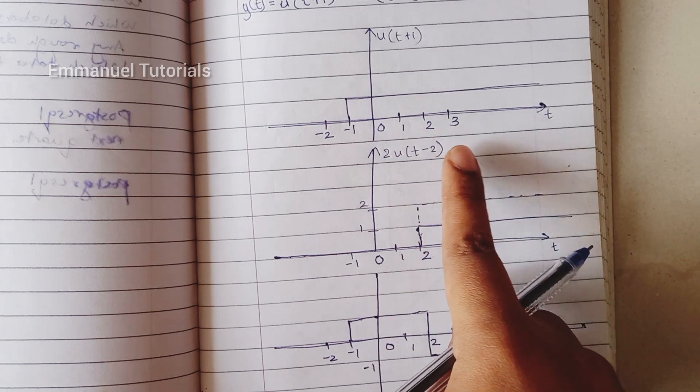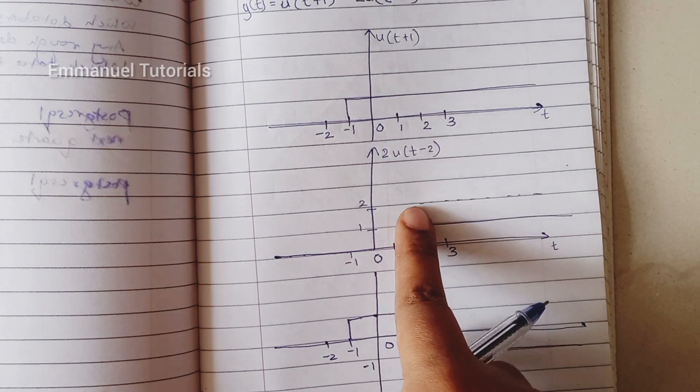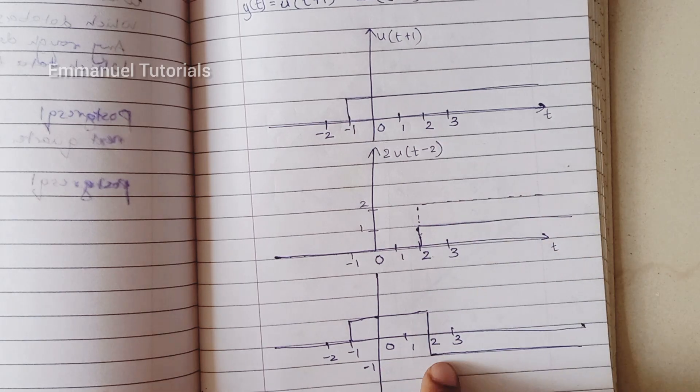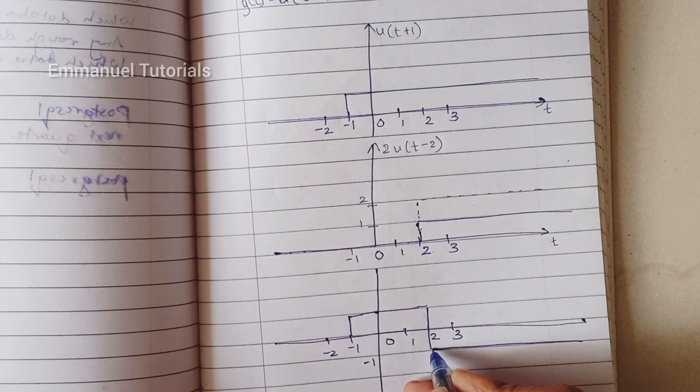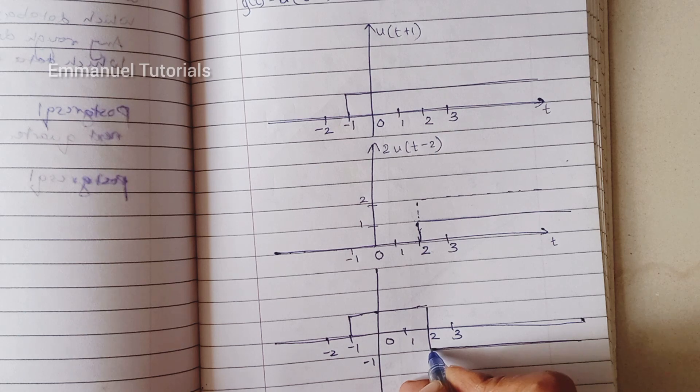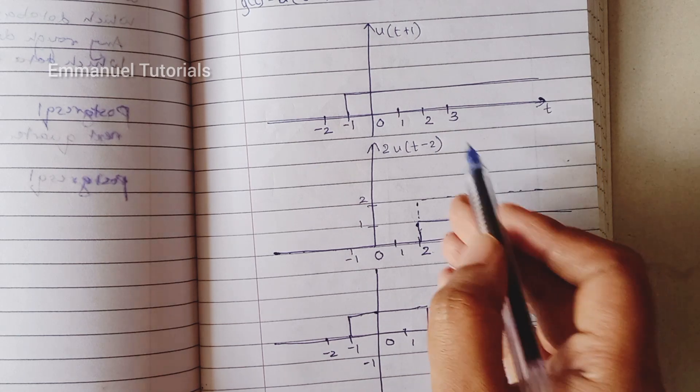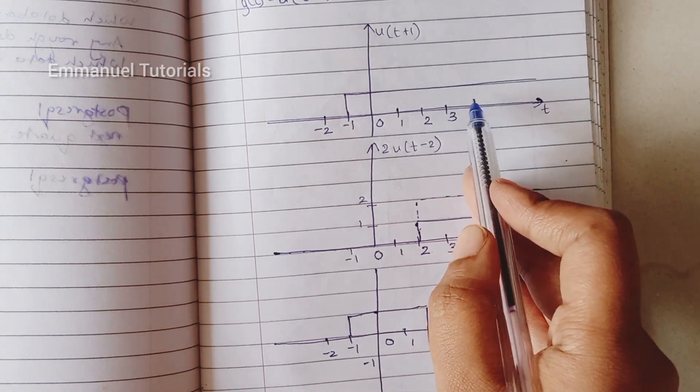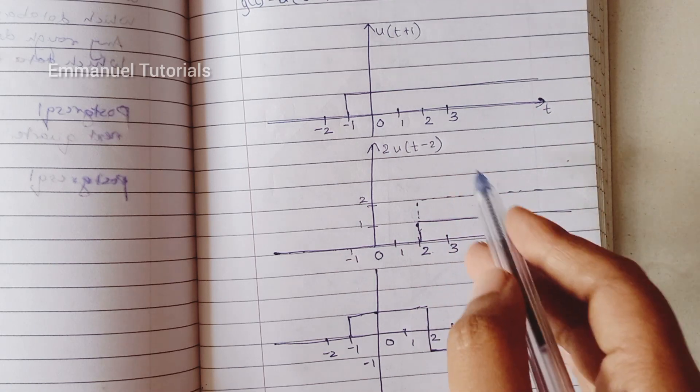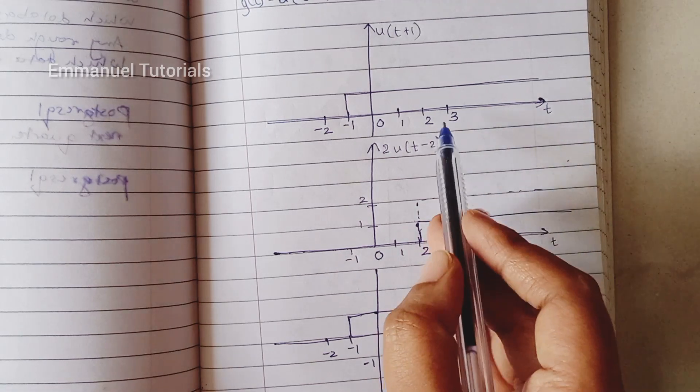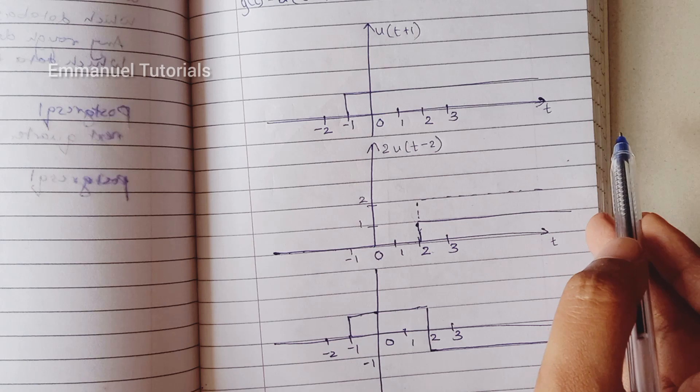At 2, 1 minus 2, because here is 2, 1 minus 2 will give us minus 1. So here I have shifted the signal to, or the point to, minus 1. Similarly at 3, first signal's amplitude is 1, second is 2. So 1 minus 2 is minus 1, and this is going to continue to infinity on the right hand side.